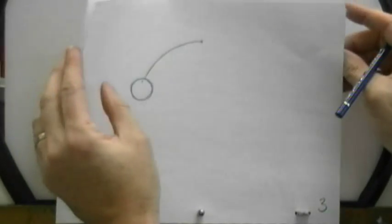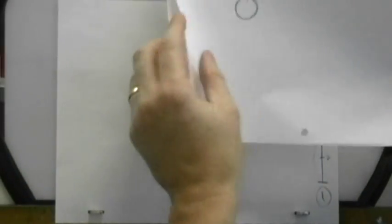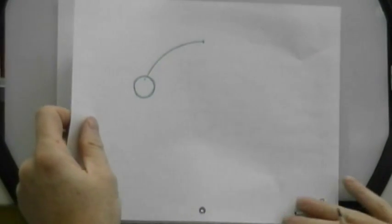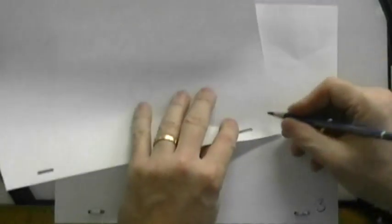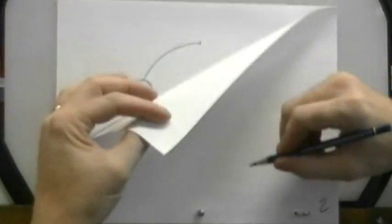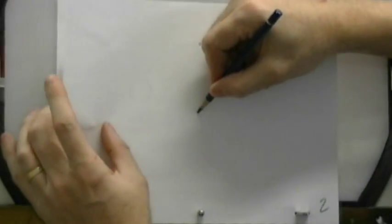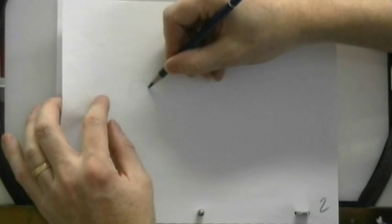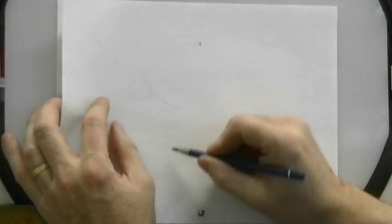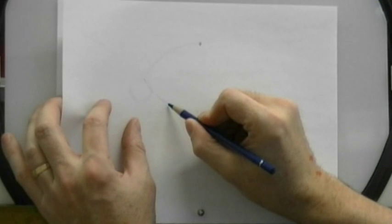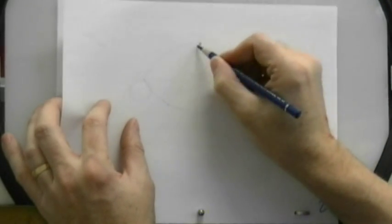So now my next in-between is going to be number two, between drawing number one and number three. This will be a halfway position. Again, finding my fulcrum point, path of action from this point down here to this point here. There's my path of action, find the halfway point between the two, and then draw my arc in.